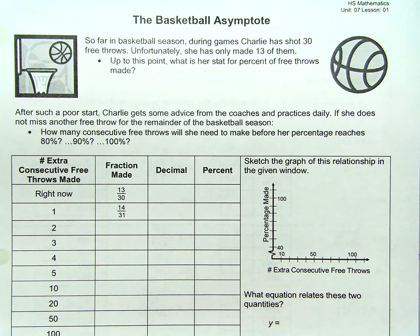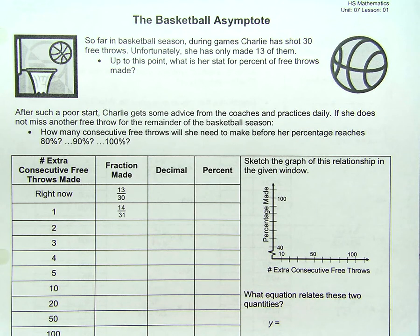So far in basketball season, during games, Charlie has shot 30 free throws, and fortunately she has made only 13 of them. Up to this point, what is her stat for percent of free throws made?